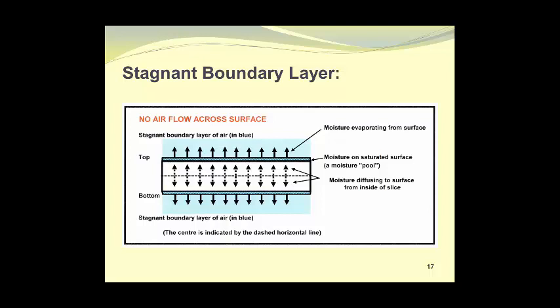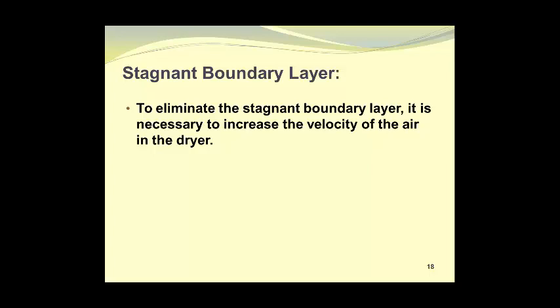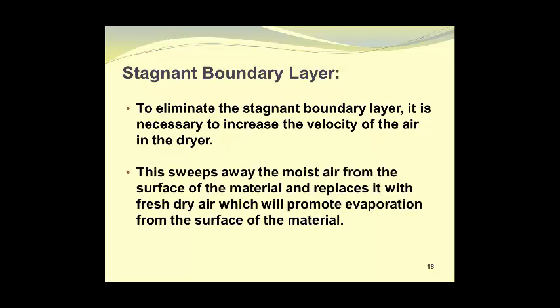The diagram shows moisture at the saturated surface forming a pool that evaporates into the air just above it. That air can become saturated and, if not moving, prevents further evaporation. To eliminate the stagnant boundary layer, it is necessary to increase air velocity in the dryer. This sweeps away moist air from the surface and replaces it with fresh dry air, which promotes evaporation from the material being dried.